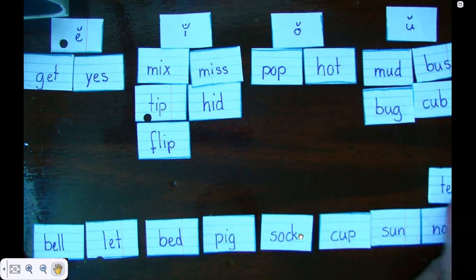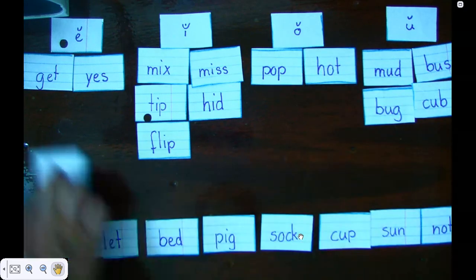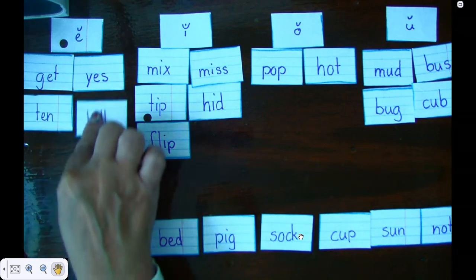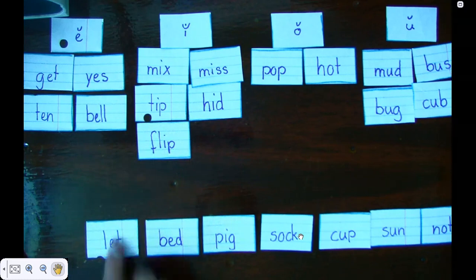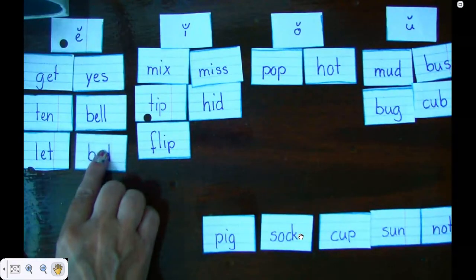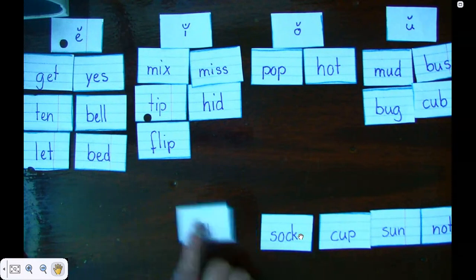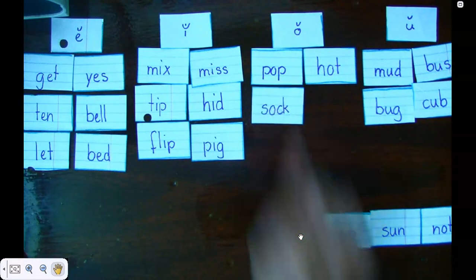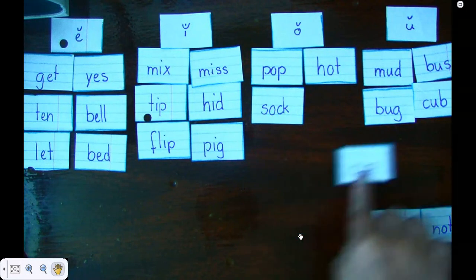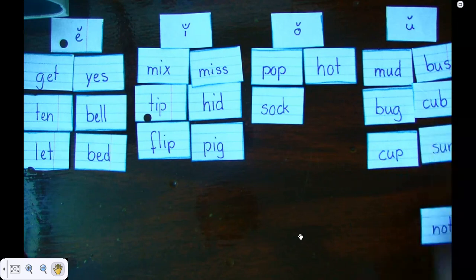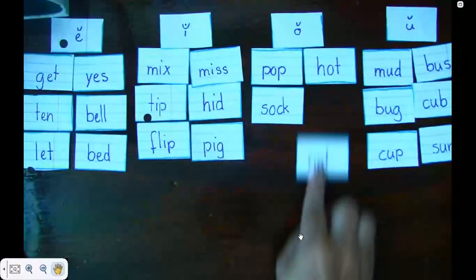Ten has an E, so it goes to my E column. Bell also has an E, E column. Let has an E. Bed has an E. Pig has an I, sock has an O, cup has a U, sun also has a U, and not has an O.